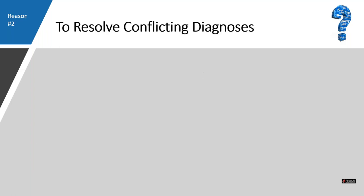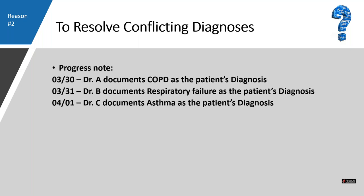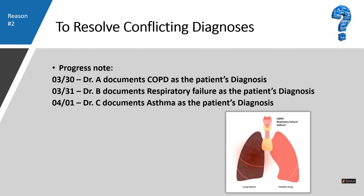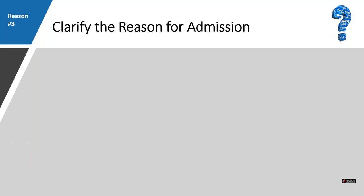Reason two: to resolve conflicting diagnoses. In our example, on March 30th Dr. A documents COPD as the patient's diagnosis. On the 31st, Dr. B says the patient has respiratory failure. And on the 1st, Dr. C says the patient has asthma. This is conflicting because multiple healthcare providers are providing different diagnoses. They are probably talking about the same thing, so the coder or CDI professional will need to query the physician to determine the correct diagnosis.